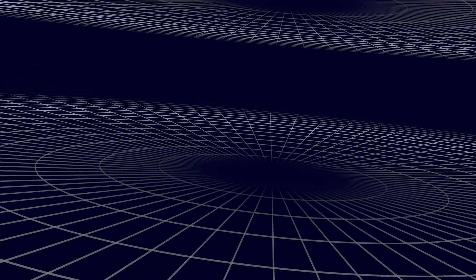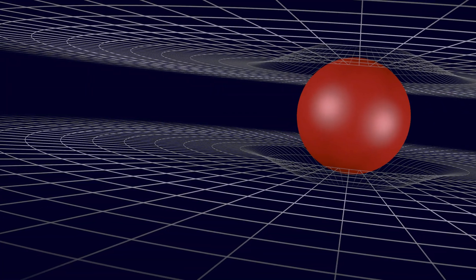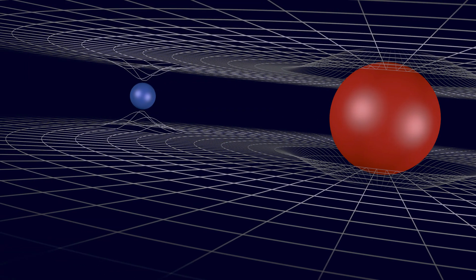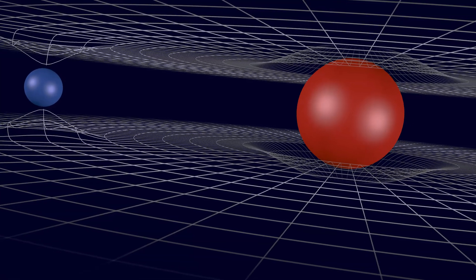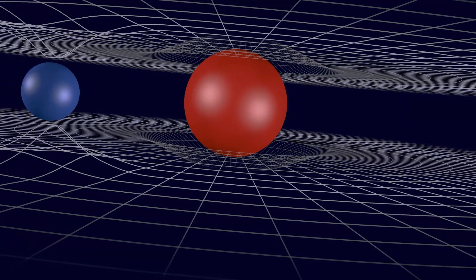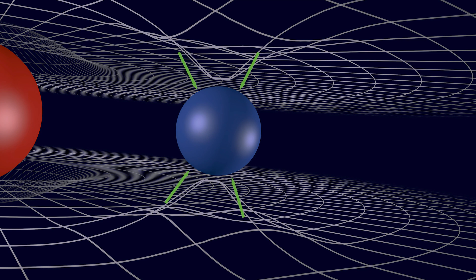In the Universe are enormous amounts of energy. In connection with a mass, energy becomes visible. The energy, for example from an electron, does not primarily originate from the electron itself but from the quantum vacuum or space-time. The electron is like a channel which integrates energy from the quantum vacuum and converts it into another form of energy, for example an electric field.